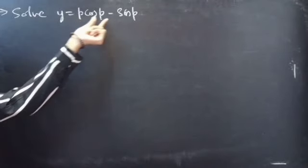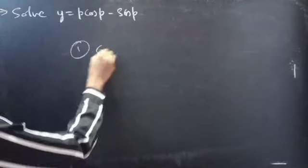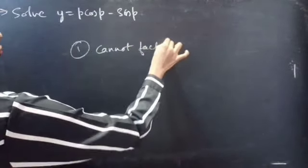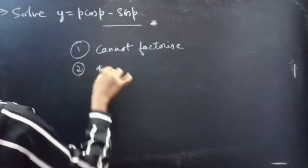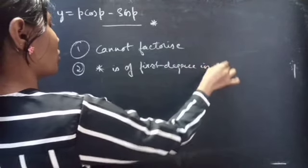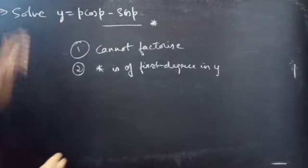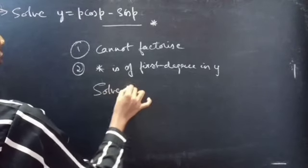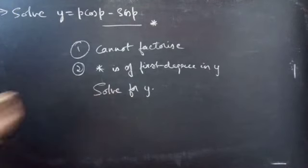The problem: solve y equals p·cos(p) minus sin(p). We are going to use the solvable-for-p approach here. We can't factorize the given equation. The given equation is first degree in y — y to the power is 1. So we can see that equation 1 is first degree in y, so we can solve for y. Since the given equation is first degree in y and also it cannot be factorized, we can solve the given equation for y.